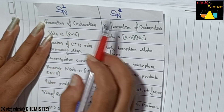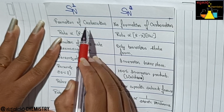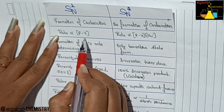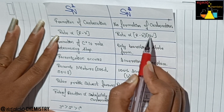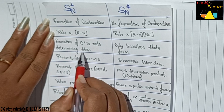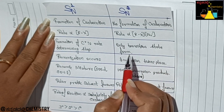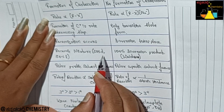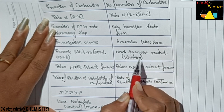The difference between SN1 and SN2: In SN1, the rate is directly proportional to the concentration of the alkyl halide only. Carbocation formation is the rate-determining slow step. Racemization occurs, giving a racemic mixture of 50% dextro and 50% levo product. SN2 gives complete 100% inversion (Walden Inversion).